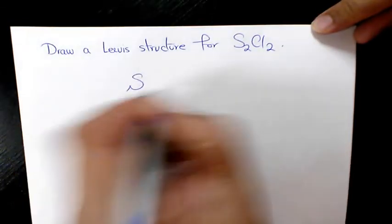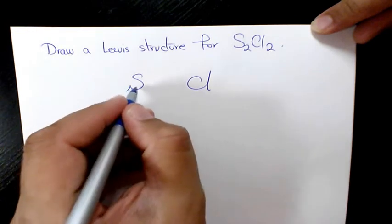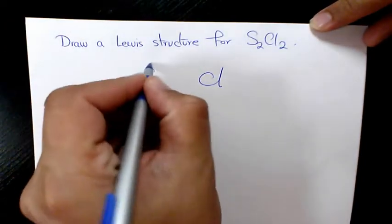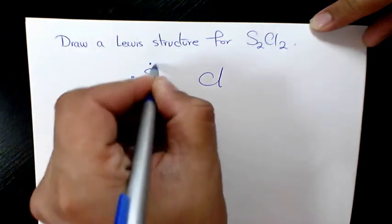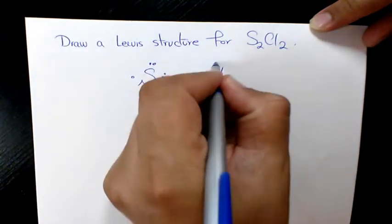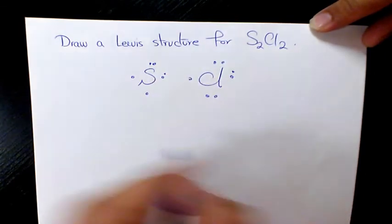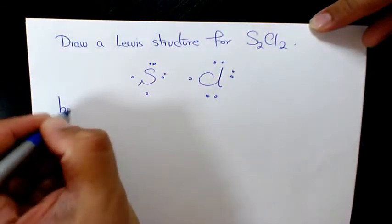The valence electrons for sulfur is six, so we have one, two, three, four, five, six. And for chlorine is one, two, three, four, five, six, seven. So the bonding capacity of sulfur is one and two.